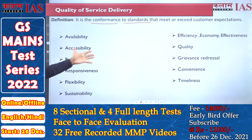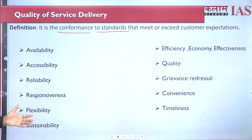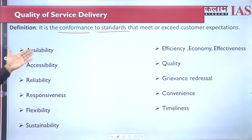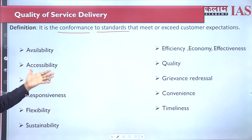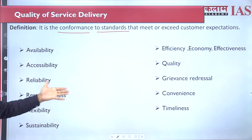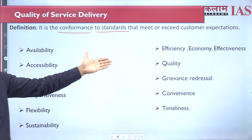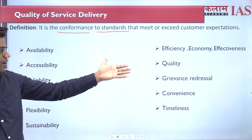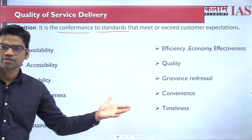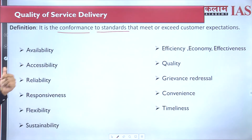These are the various parameters on which we can judge whether a service delivery has been done qualitatively or not — whether it is availability, accessibility, reliability, efficiency, economic effectiveness, convenience, or timeliness. There are many parameters on which we can judge the quality of service delivery.